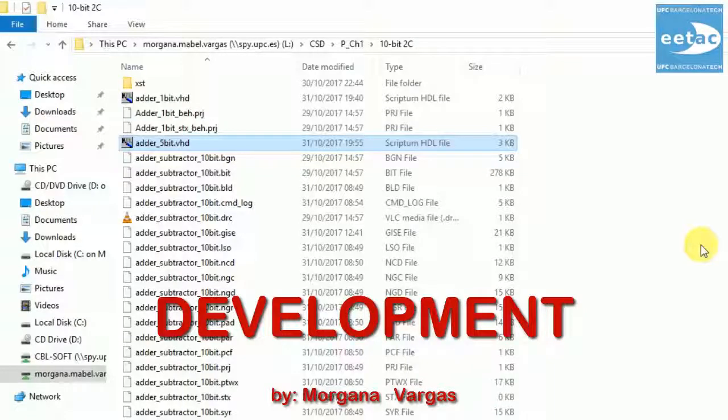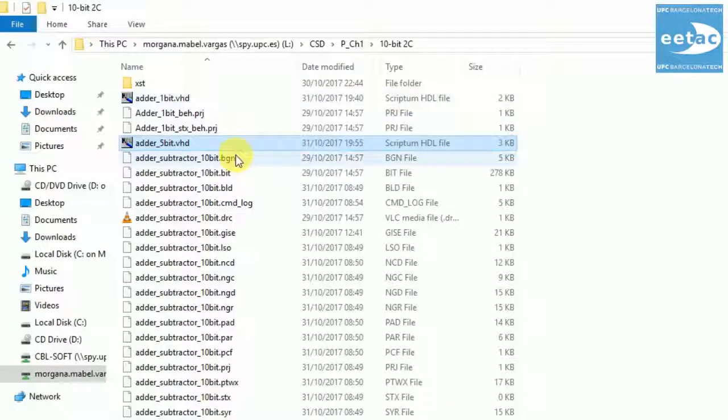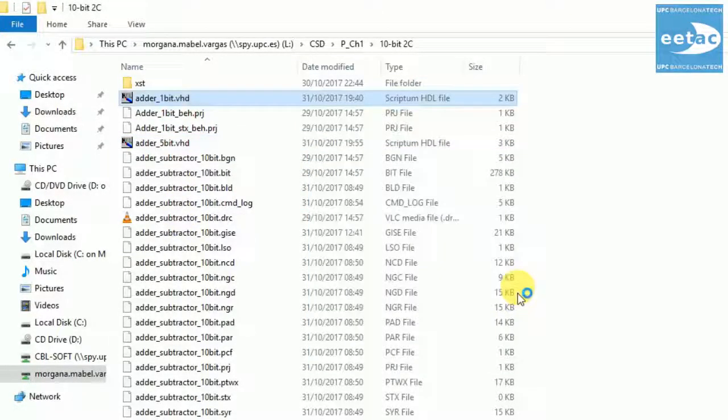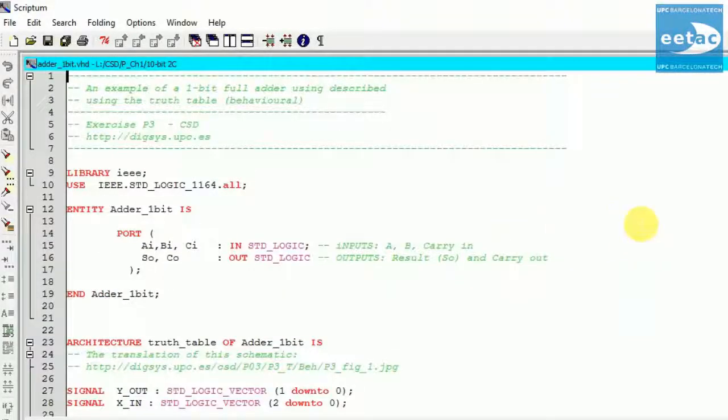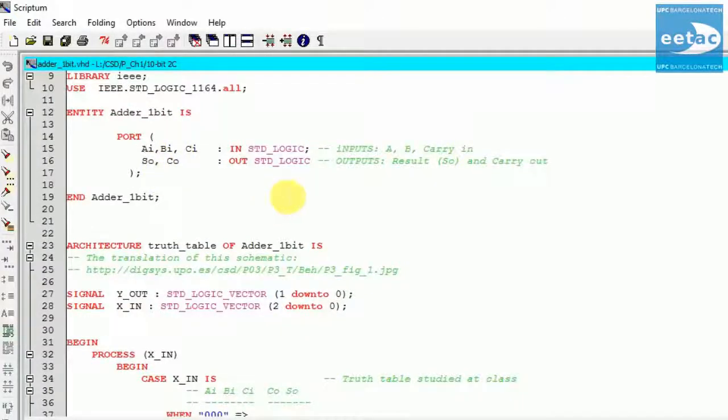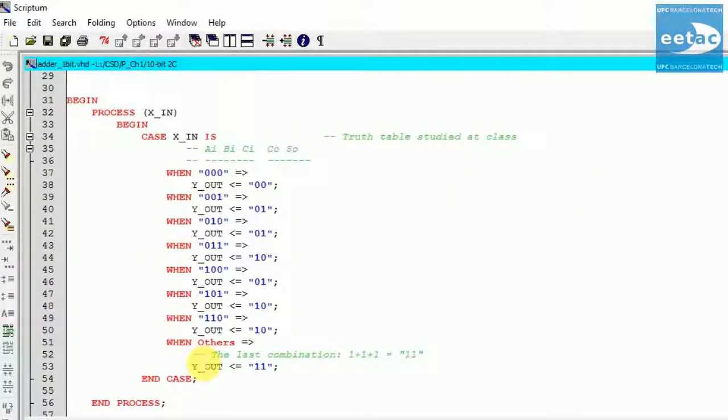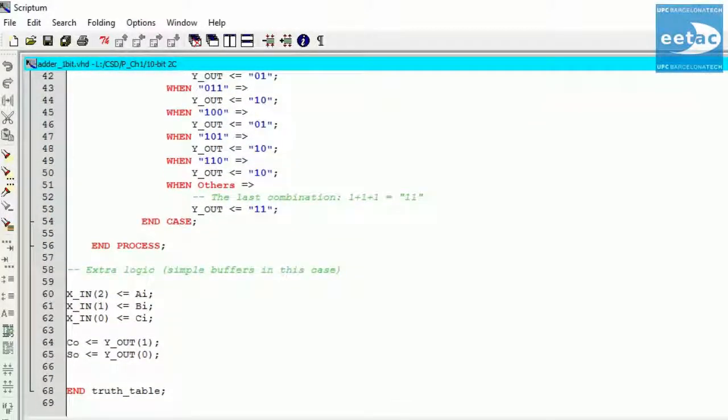The next step of the project is the development. So we will need adder 1 bit to make adder of 5 bits. And these two files are going to be useful to finally obtain the adder subtractor 10 bits. So the first file is the adder 1 bit. It is very simple. It's only about having its inputs and outputs. And then here is the truth table as we have studied it in class. And that's all for this adder 1 bit.